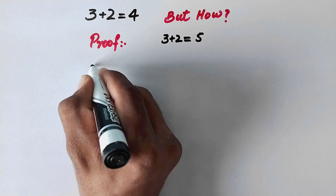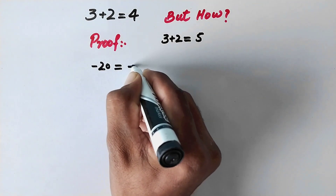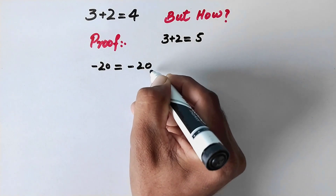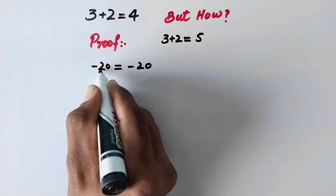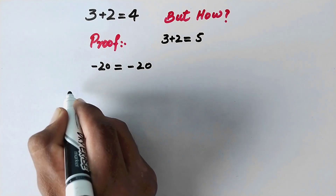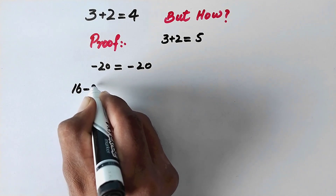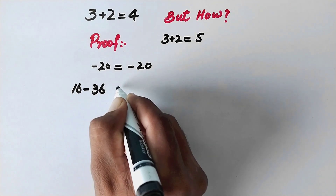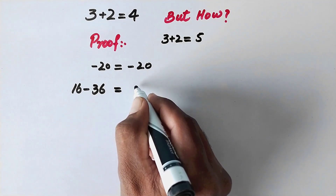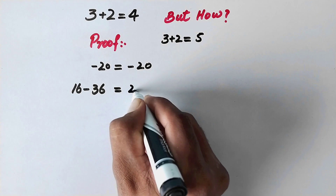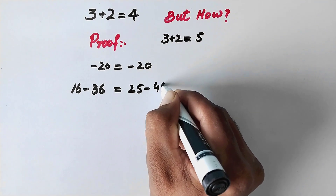So here, to begin, we can write minus 20 is equal to minus 20. And in the next step, we can write this minus 20 as 16 minus 36, which equals minus 20, which is also the same as 25 minus 45.